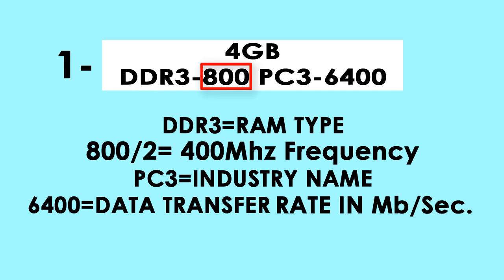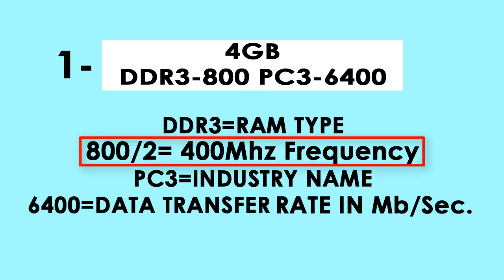What does 800 indicate? In general, 800 indicates the frequency of the RAM, but it is not the real frequency. If we divide 800 by 2, we will get the real frequency in megahertz.